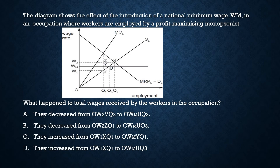The next question: the diagram shows the effect of introducing a national minimum wage Wm in an occupation where workers are employed by a profit-maximizing monopsonist. What would happen to the total wages received by workers? The monopsonist employs at the point where MC equals marginal revenue product of labor, and at that point pays wage rate W1. Total wage is the number of workers OQ1 multiplied by the wage OW1.